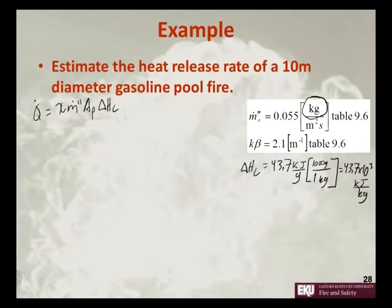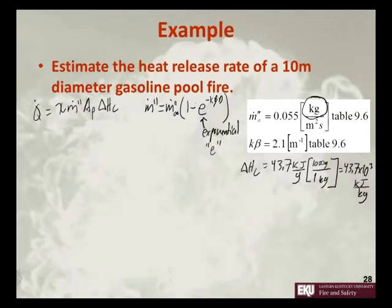And then, we need to know our mass flux. This is equal to our asymptotic mass flux times 1 minus the exponential of negative k-beta d. Now, this is exponential, not the letter e on your calculator.